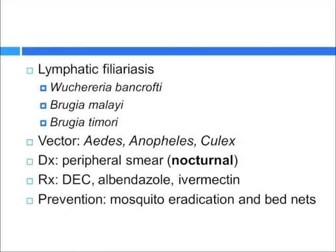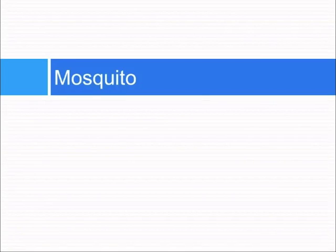Filariasis can also be distributed by mosquitoes, especially lymphatic filariasis, caused by Wuchereria bancrofti and Brugia. The vectors include multiple species — Aedes, Anopheles, and Culex — basically everything we've talked about already. Diagnosis is done by peripheral smear, and you want to get the blood sample at night because that's when the filaria emerge into the bloodstream. Treatment would be with DEC, albendazole, and ivermectin. Prevention includes eradication measures and use of bed nets.